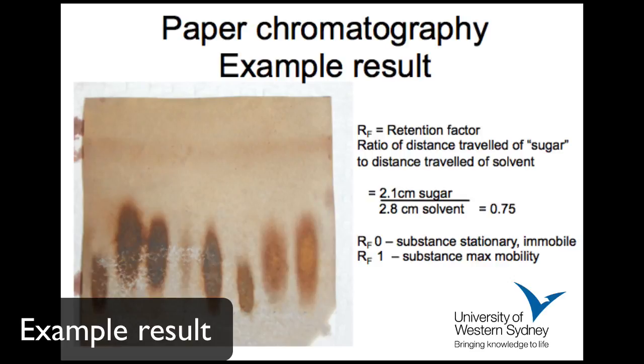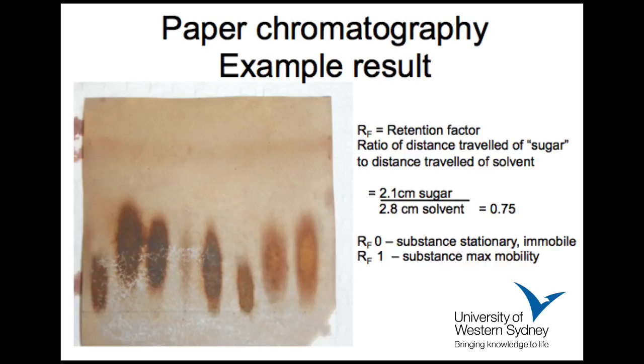So here we have a typical example showing the stained sugars, and you can see that the different sugars are running in different positions relative to the solvent. And therefore, you can calculate the RF value for each sugar.